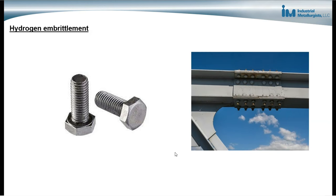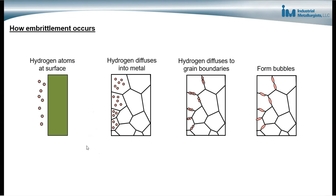So hydrogen embrittlement occurs when a metal is exposed to hydrogen atoms and those atoms are able to diffuse into the metal and then diffuse to the grain boundaries. And then finally form bubbles at the grain boundaries. Those bubbles exert stresses on the grain boundaries that result in a weakening of the grain boundaries. And that weakening can lead to cracking and fracturing of the metal.